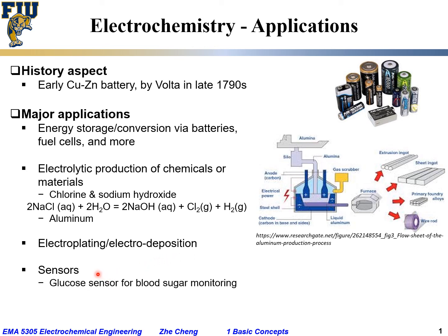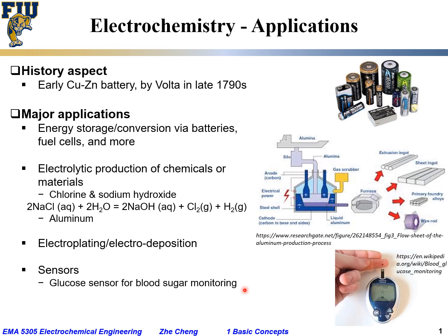Electrochemistry is also the foundation for many different types of sensors. One famous example is the glucose sensor used for monitoring blood sugar and for people to manage their diabetes condition. Here is a photo of a typical blood sugar sensor. At the tip of the test strip, you draw a small drop of blood, and this meter passes a small current and measures the concentration of blood sugar or glucose in the system. The underlying principle is still electrochemistry.